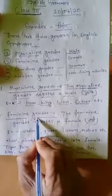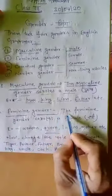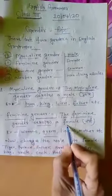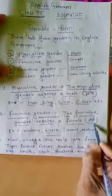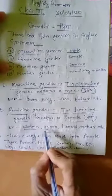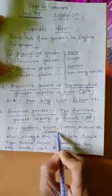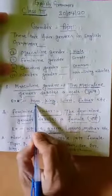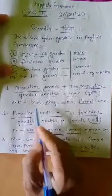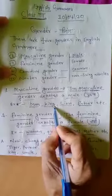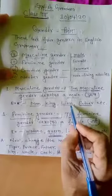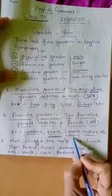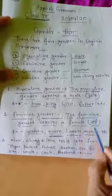Second, feminine gender. The feminine gender denotes female. For example: woman, queen, rani, lioness, sherni, mother, ma. Man is masculine, king is masculine; queen is feminine. Lion is male — purush — and lioness is female. Father is male, mother is female.